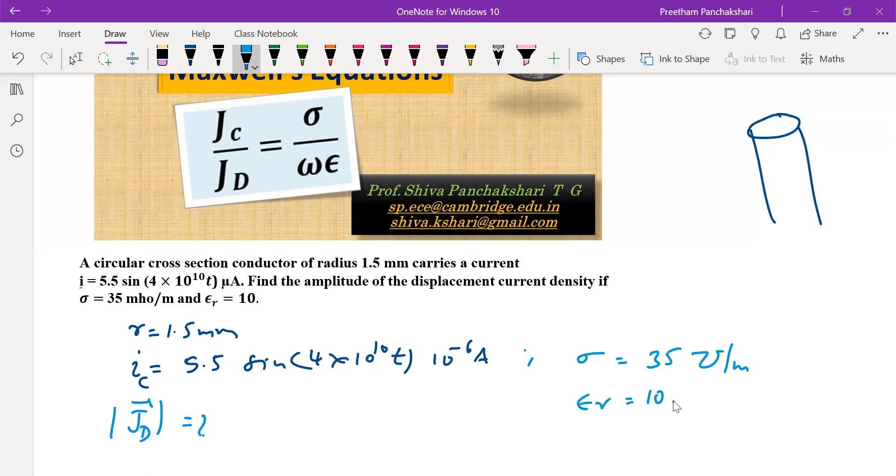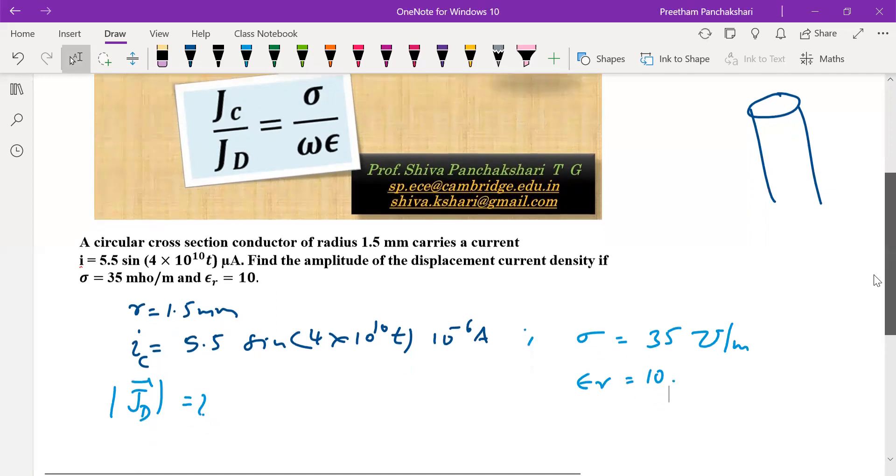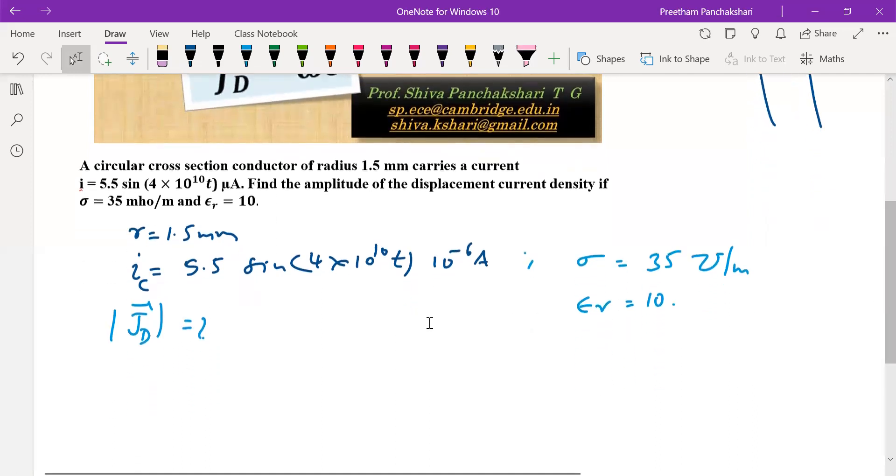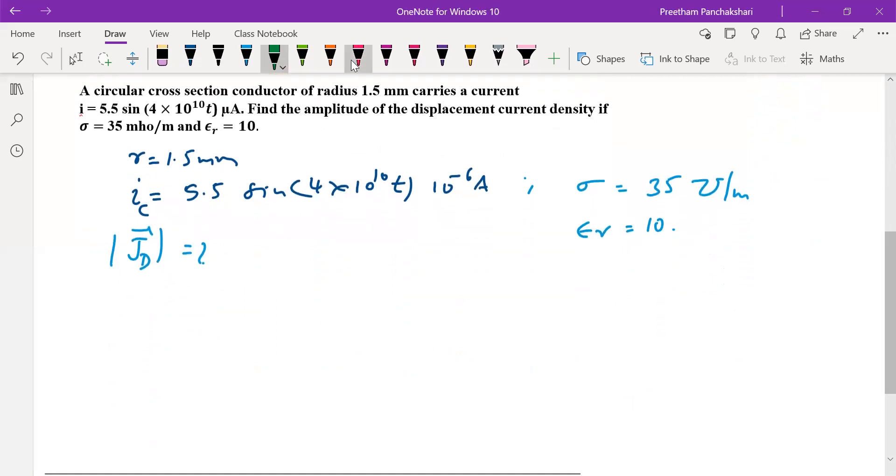Making use of these values we can find displacement current density, but given as conduction current density, so we need to have a relation between conduction current and displacement current. For this we know that conduction current density is given by Ohm's law in point form, σE.